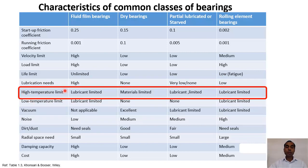For high temperature limits, fluid film bearings are limited by the lubricant and generally cannot be used at very high temperatures. Dry bearings can be used at high temperature — it is material limited, and with high temperature solid lubricants such as MoS2 or graphite they can operate at elevated temperatures. Partially lubricated and rolling element bearings, which use lubricants like grease, are also limited in high temperature applications.